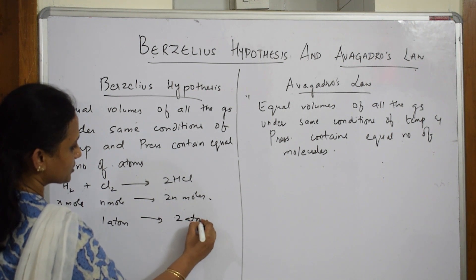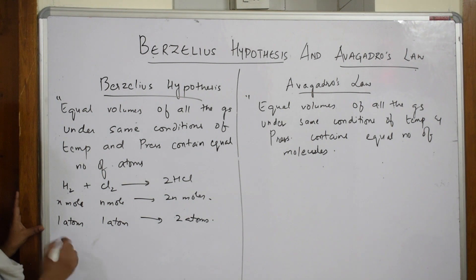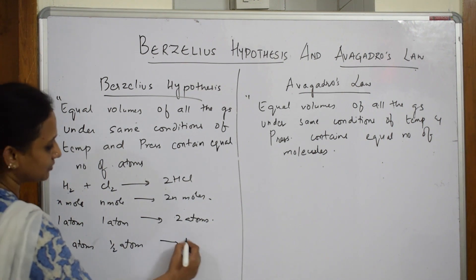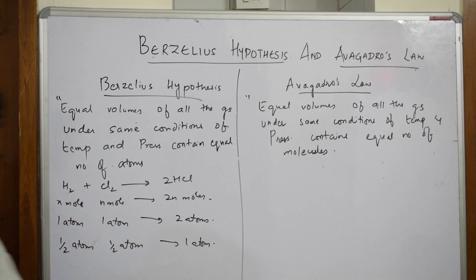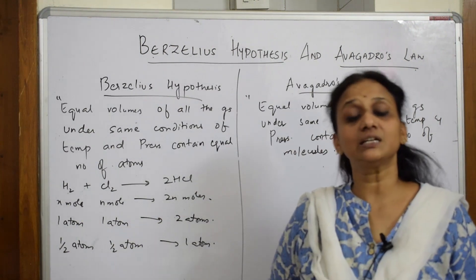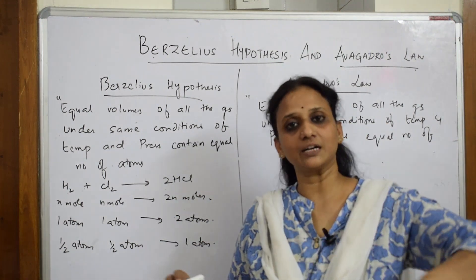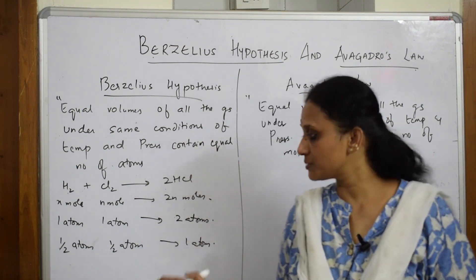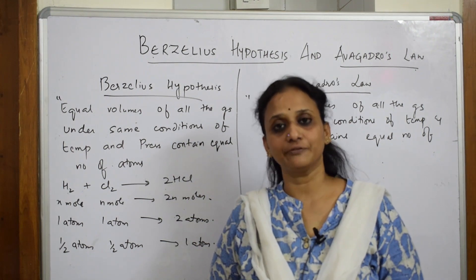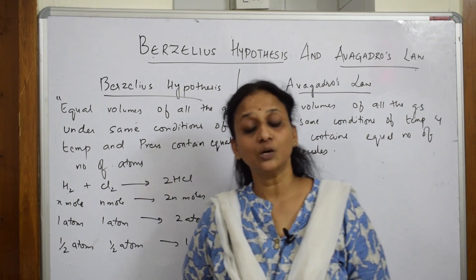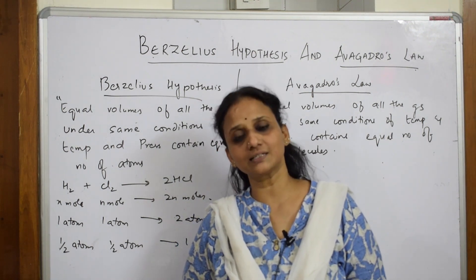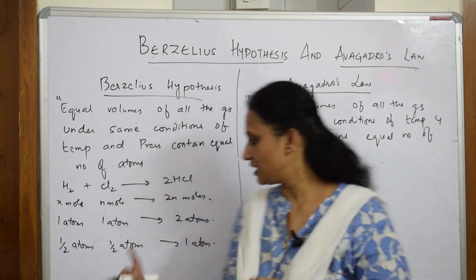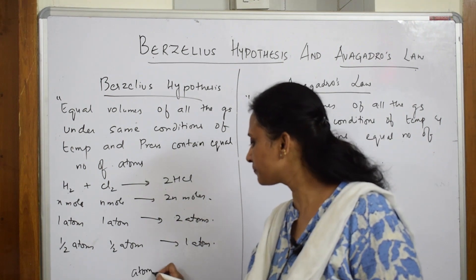Writing in terms of atoms as Berzelius proposed: one mole becomes one atom, one atom, two atoms. Further dividing: half atom, half atom, one atom. But according to Dalton's atomic theory, atoms are indivisible — there is nothing called a half atom. You can speak about half a molecule, but not half an atom.